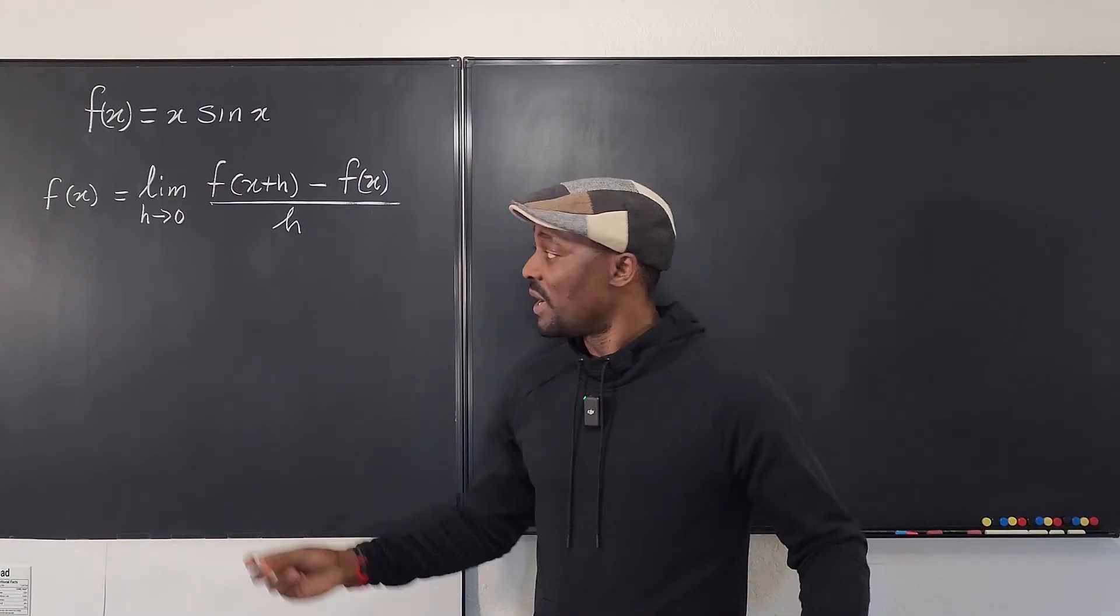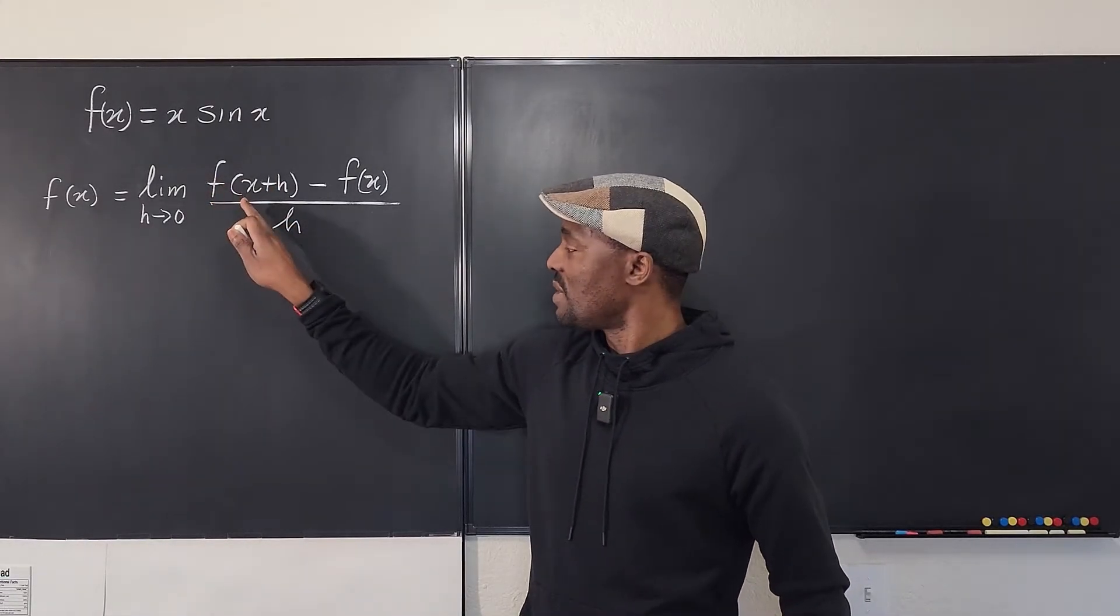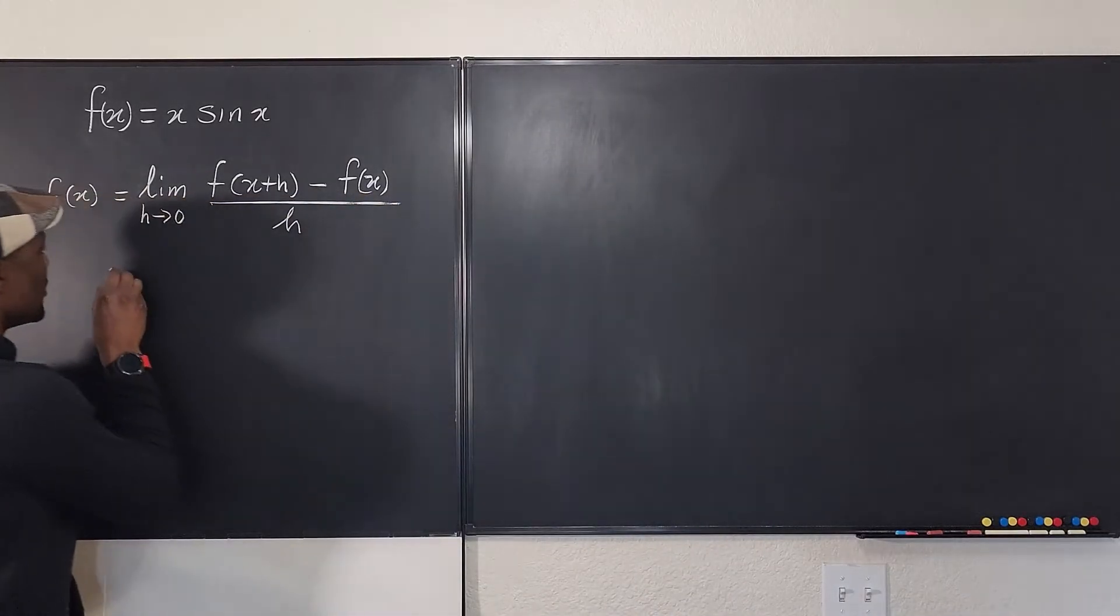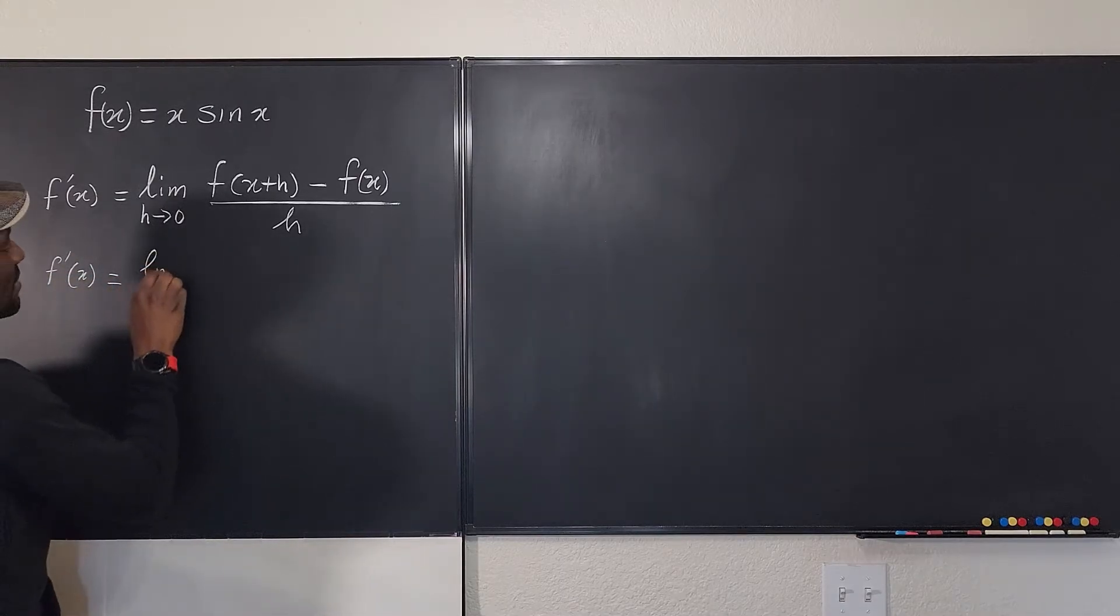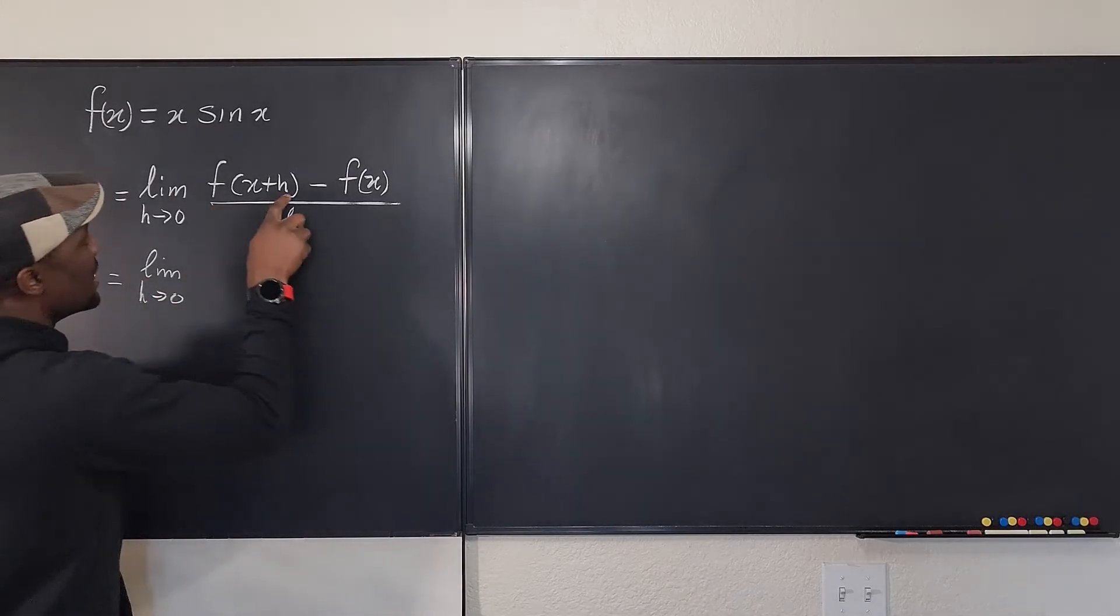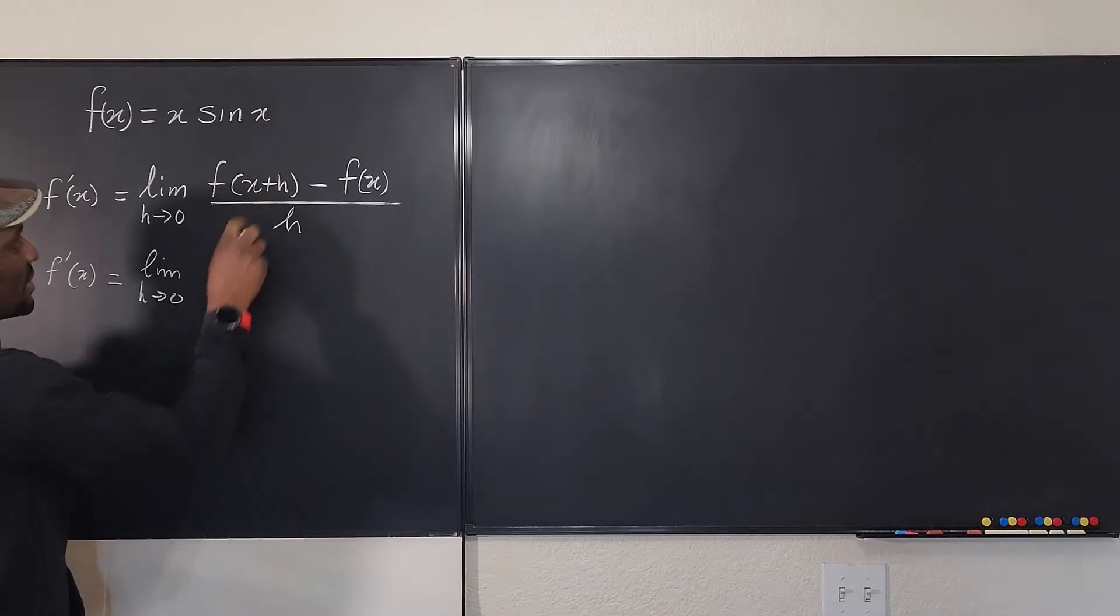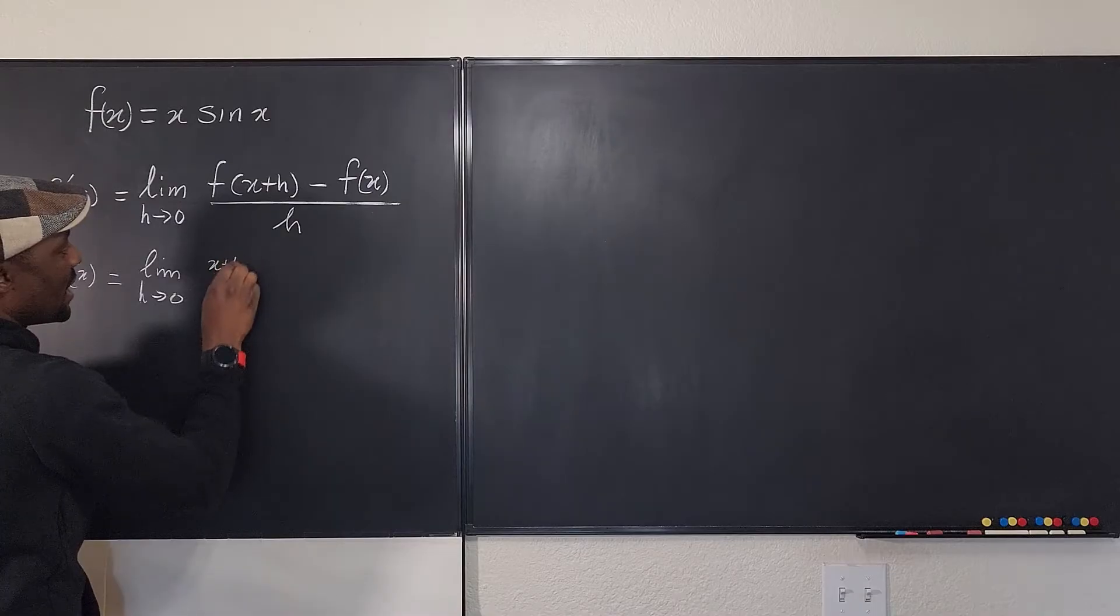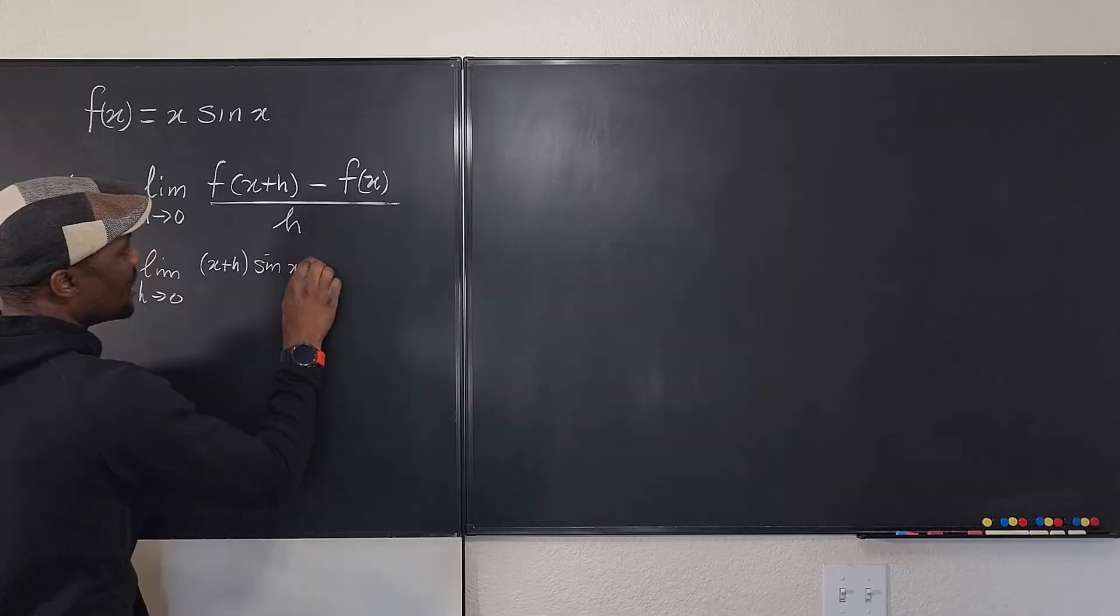So the first thing we're going to do is make sure we obey this rule that it's going to be f of x plus h minus f of x. So what is f of x plus h? So f prime of x will be equal to the limit as h goes to zero of, now what's the function? It's x sin x but this is x plus h. So we're going to replace x with x plus h and multiply it by sin of x plus h.